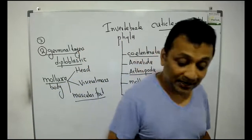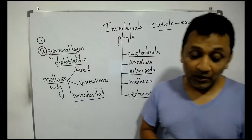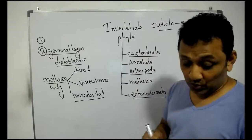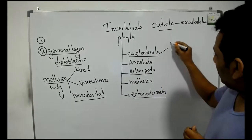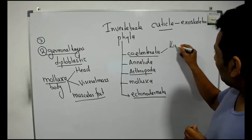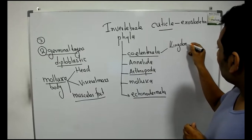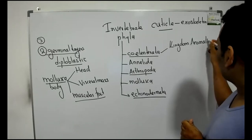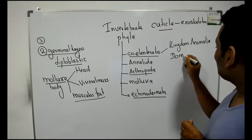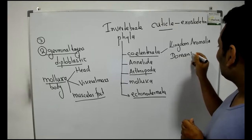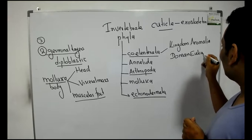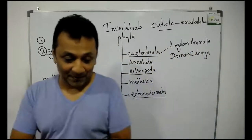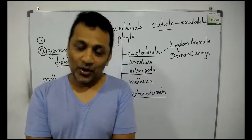Question number three: Write down the kingdom and domain to which phyla started in one above belong to. Coelenterata belongs to kingdom Animalia. Kingdom Animalia you have to write. Domain Eukarya. So that is the answer for the Roman number three. With that one, the A part comes to end.